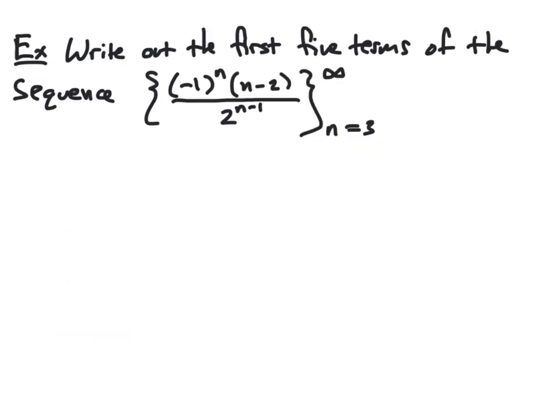In this example, we want to write out the first five terms of the sequence, whose general term is given by negative 1 to the n times n minus 2 all over 2 to the n minus 1 power. Important to note here that we actually want to start this sequence with n equal to 3 instead of n equal to 1 as in the previous example. And so our first five terms here will actually be a sub 3, a sub 4, a sub 5, a sub 6, and a sub 7. And that's all dictated by the notation here that we will start our indexing at n equal to 3.